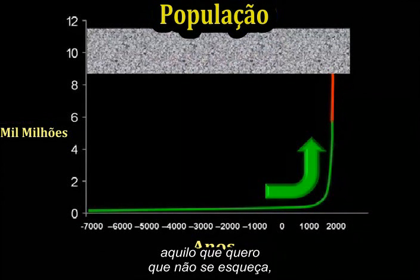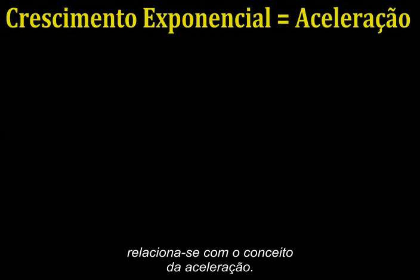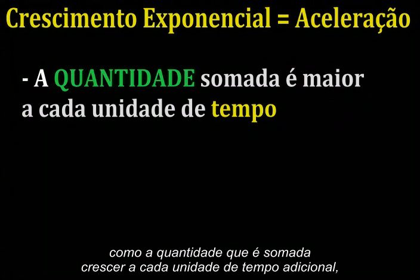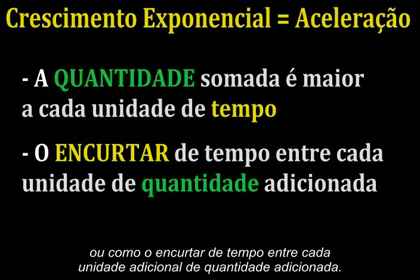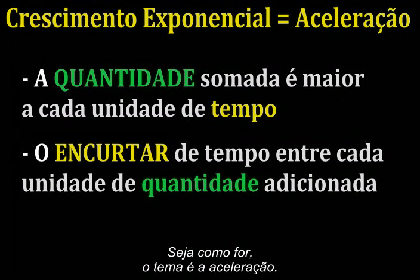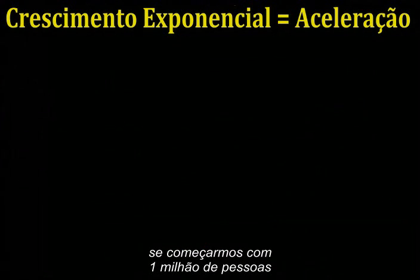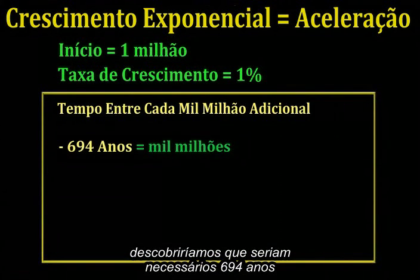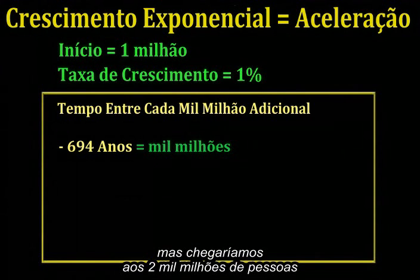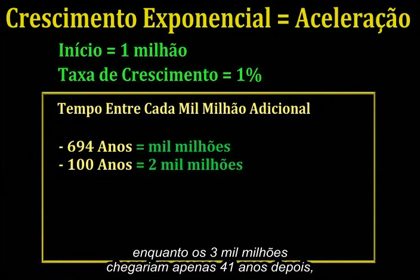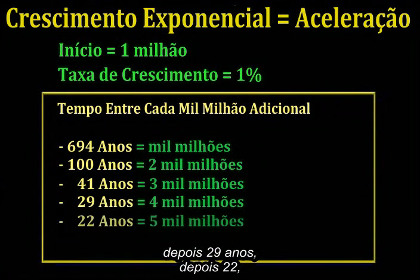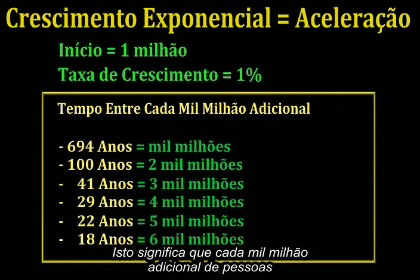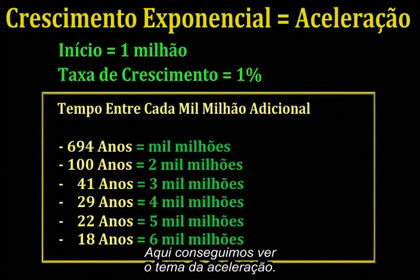The critical takeaway for exponential functions relates to the concept of speeding up. You can think of the key feature of exponential growth either as the amount that is added growing larger over each additional unit of time, or as the time shrinking between each additional unit of amount added. Either way, the theme is speeding up. To illustrate this using population, if we started with one million people and set the growth rate to a measly 1% per year, we'd find that it would take 694 years before we achieved a billion people. But we'd be at two billion after only a hundred more years, while a third billion would require just 41 more years — then 29 years, then 22, and then finally only 18 years to add another to bring us to 6 billion people. Each additional billion people took a shorter and shorter amount of time to achieve. Here we can see the theme of speeding up.